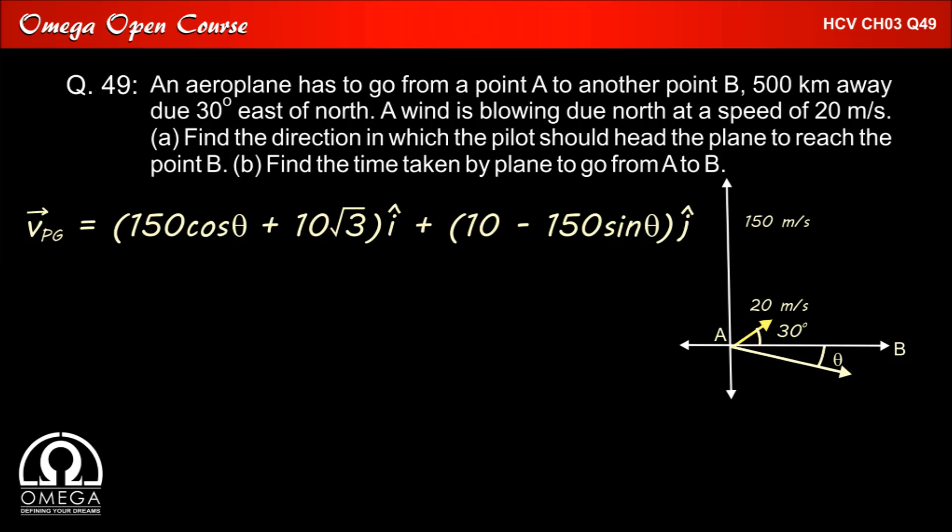Since the resultant velocity of plane must be along AB, and we have taken AB as the x-axis, the vertical component of the resultant must be zero. The vertical component is 10 - 150 sin theta, which must equal zero. This gives us 10 - 150 sin theta = 0.